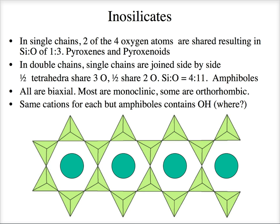Certain amphiboles only form under certain pressures, so you get a certain composition tied to pressure or temperature — and this is what creates geothermometers and geobarometers. A mineral like quartz forms everywhere from the surface all the way down, so quartz just tells you you're on Earth. But when you have specific amphiboles you can really forensically pinpoint where they were formed, and that's very useful.